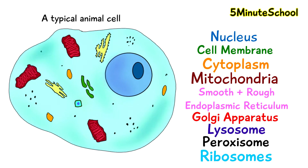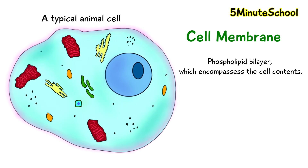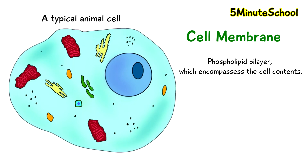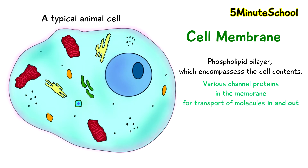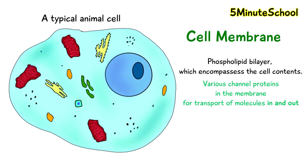Let's talk about the cell membrane first. The cell membrane is what contains the organelles of the cell — it encompasses or surrounds the cell contents and closes it off. The cell membrane consists of a phospholipid bilayer which has various transport and channel proteins dotted along the membrane to allow the movement of various molecules and waste products in and out of the cell.